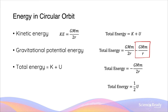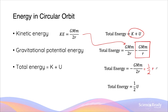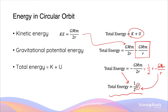The gravitational potential energy is given by the equation minus GMm over r. So when we look at the total energy, this is given by kinetic energy plus gravitational potential energy. Adding those expressions gives us a very simple expression for the total energy: minus GMm over 2r. This can be written as one half times the gravitational potential energy, and this only applies to circular orbits.